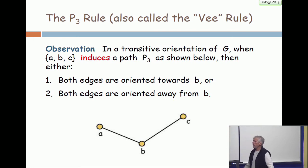the B is the vertex in the bottom, and the A and the C are there. Whenever you have an induced P3, then if you're going to orient it transitively, you have to orient both edges towards B or both edges away from B. How complex is that? It's just trivial.